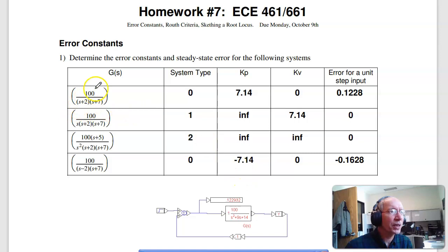Kp is the DC gain, plug in s equals zero. I get 100 over 14, infinity, infinity, 100 over minus 14.